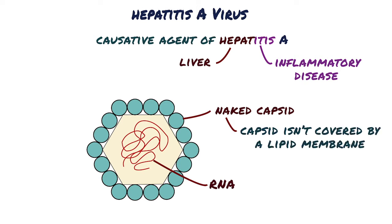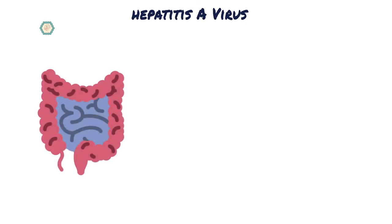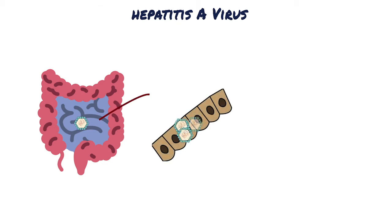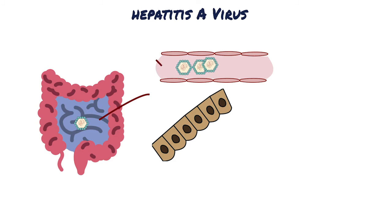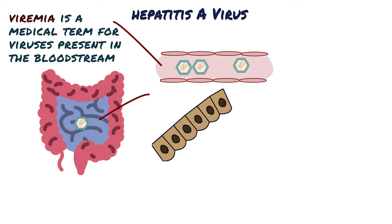Hepatitis A virus infections often result from the consumption of contaminated water, shellfish, or other food. After a typical entrance via the oral route, the Hepatitis A virus multiplies in the epithelial lining of the intestinal tract. Viremia eventually occurs, which is a medical term for viruses present in the bloodstream, and the virus spreads to the liver, kidneys, and spleen.